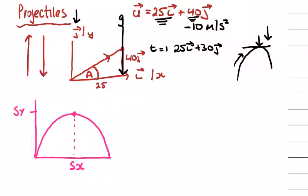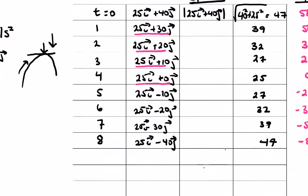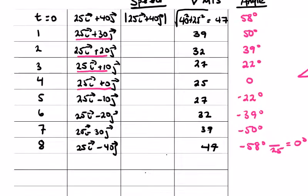There's a couple of ways to do it. If we have the time taken to get here, we have t is equal to four from the table, don't we? Time is equal to four at the max height when the angle is zero.